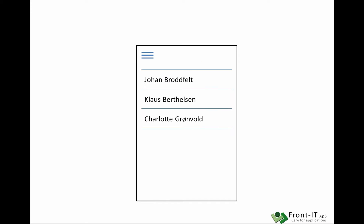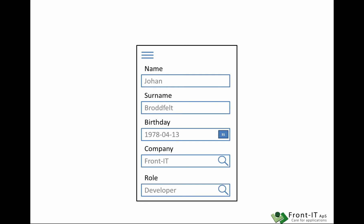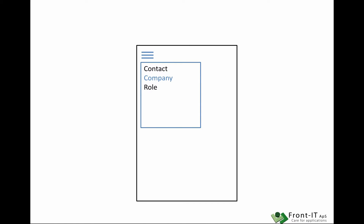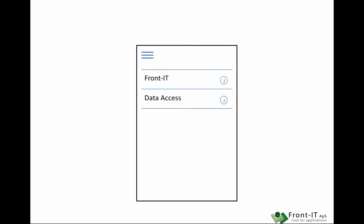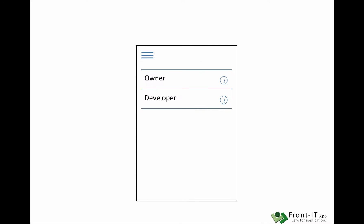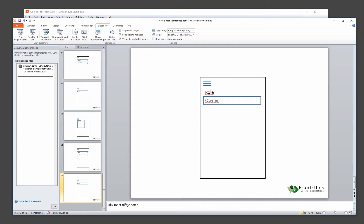We're going to have a menu where we can select contact, company, or role. If we select company we get a list of contacts, and you can click on a contact and go in and edit them. You can also select company and get a list of companies which you can edit, and you can edit the roles.